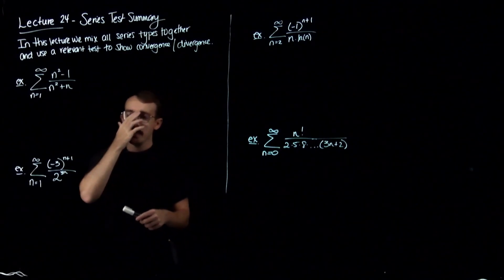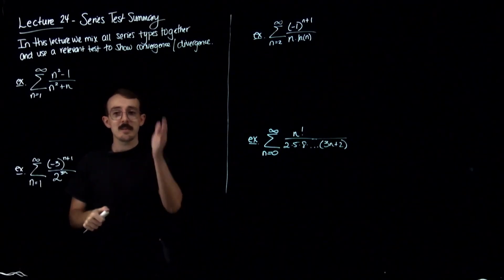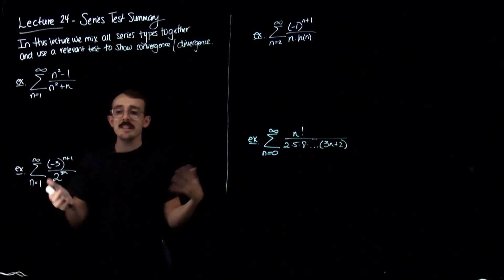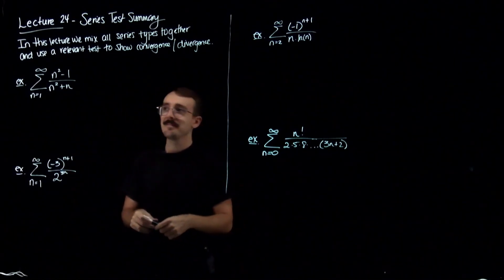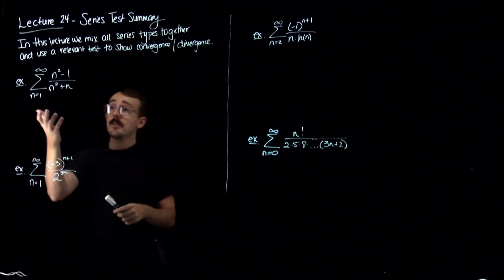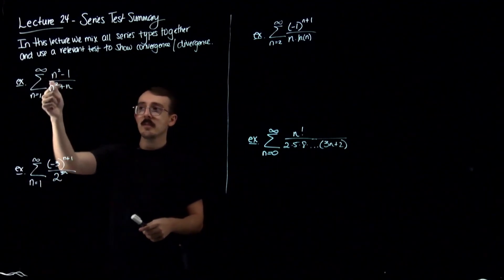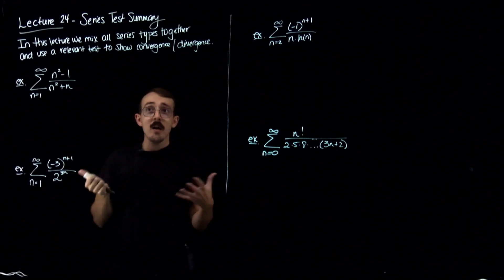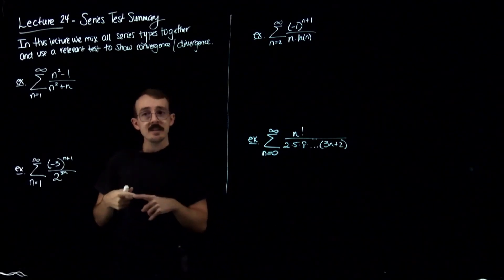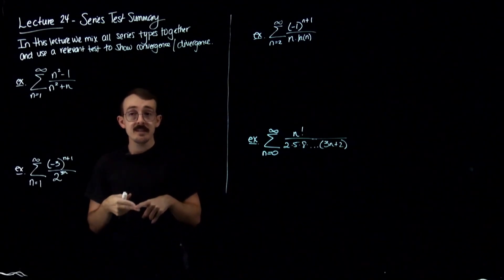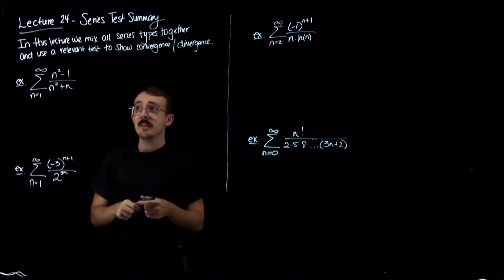Let's look at the first example. Before I start, as usual I want you to pause this, go try all four of these, at least think about what test you would try, and then come back when you're ready. For this first one, I'm seeing a polynomial over a polynomial, so some options I could think to do would be the direct comparison test or the limit comparison test.